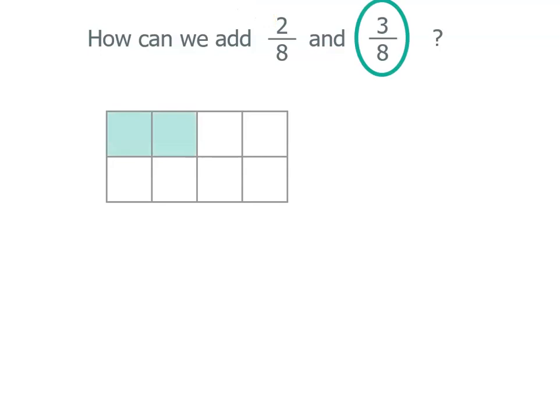That's what 2 eighths looks like. Our other fraction has 8 as the denominator again, so that means we can add them, and our numerator is 3, so we're going to have 3 equal parts.